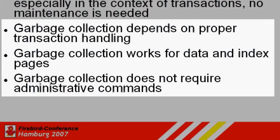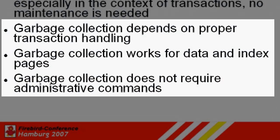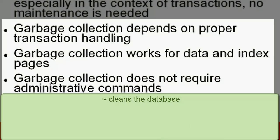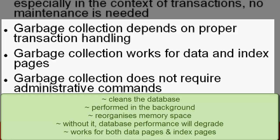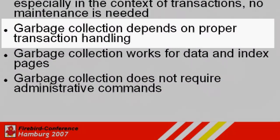Garbage Collection: as you make changes to tables and table structures, it leaves behind old versions of information that need cleaning at some point. Poor programming, poor transaction handling, no time out on the transactions — all deny the garbage collection the ability to clean up old records. Garbage Collection is the ongoing cleaning of the database and is performed in the background around the clock. This constantly reorganizes the memory space used by the database. If you don't clean up, database performance will slowly but surely degrade. Garbage Collection works for both data pages and index pages, and depends on proper transaction handling.